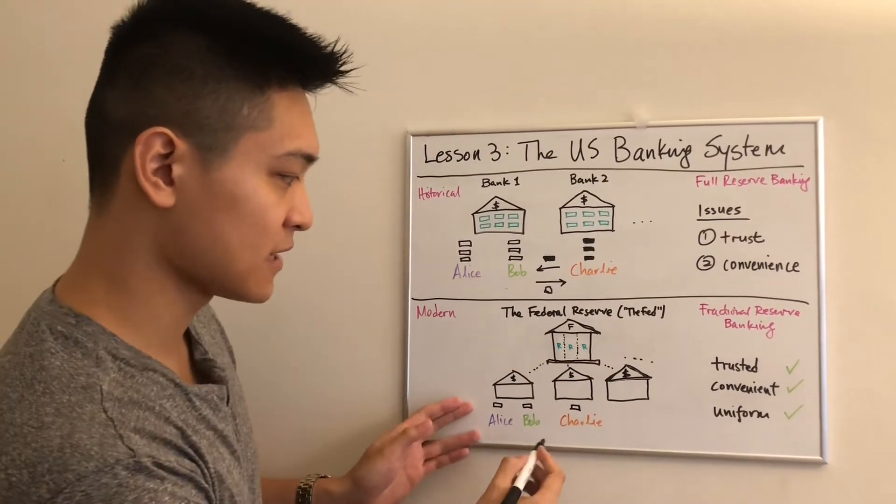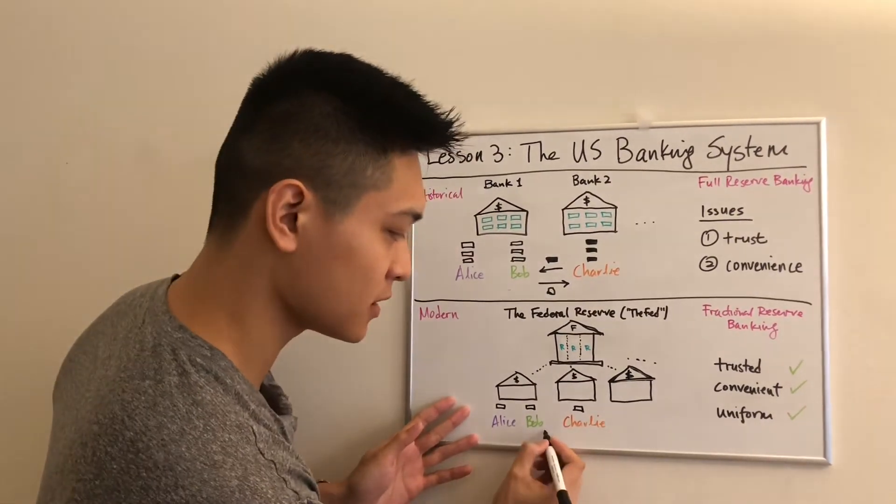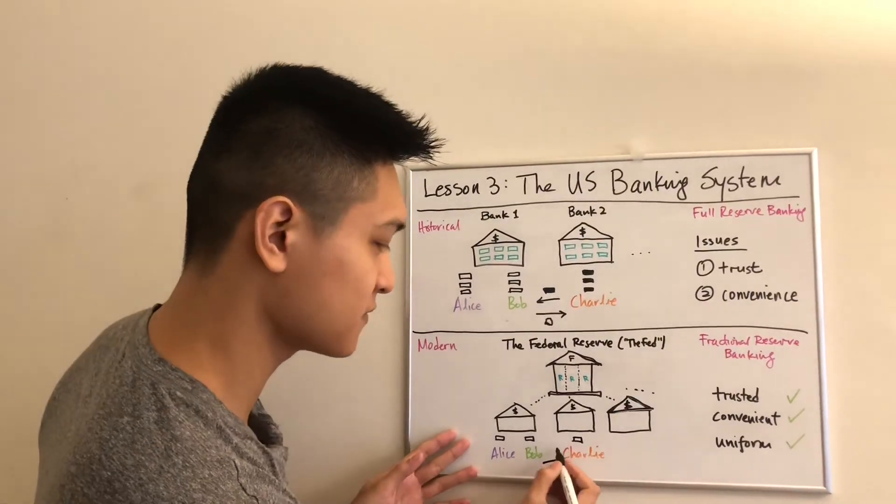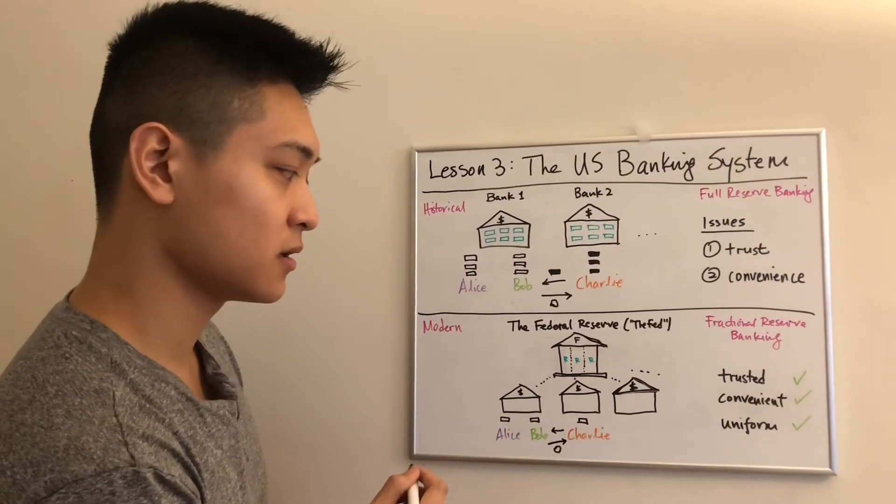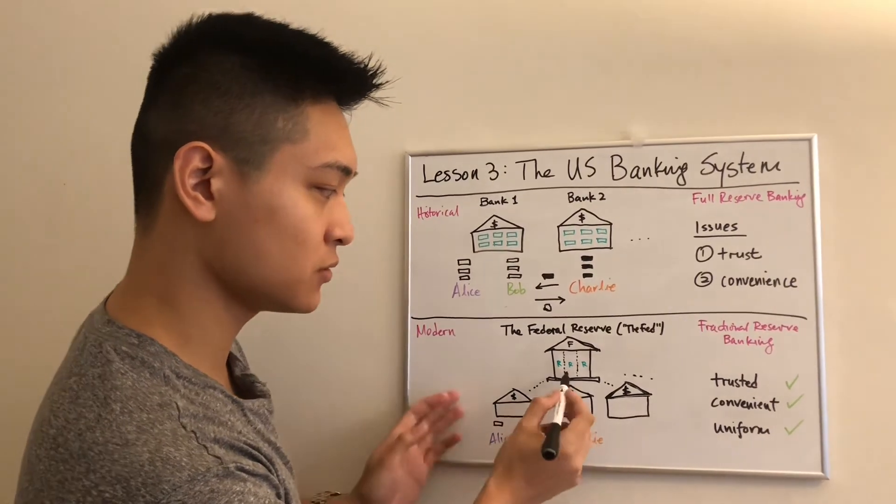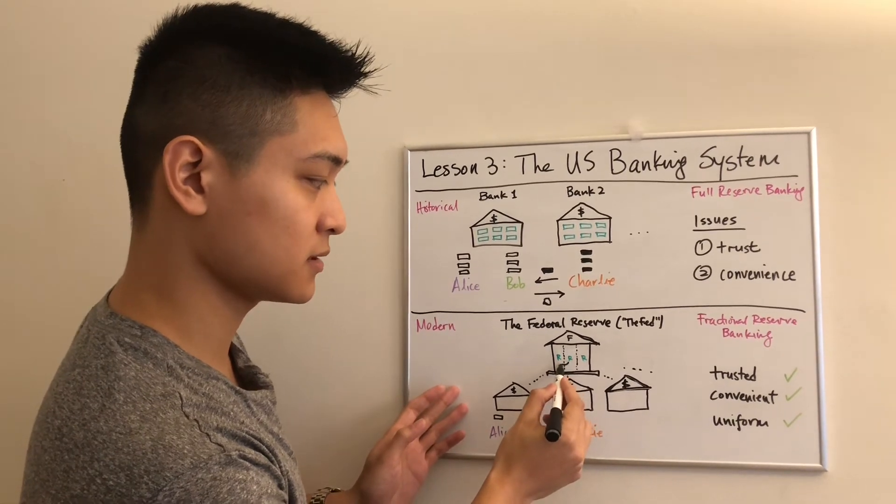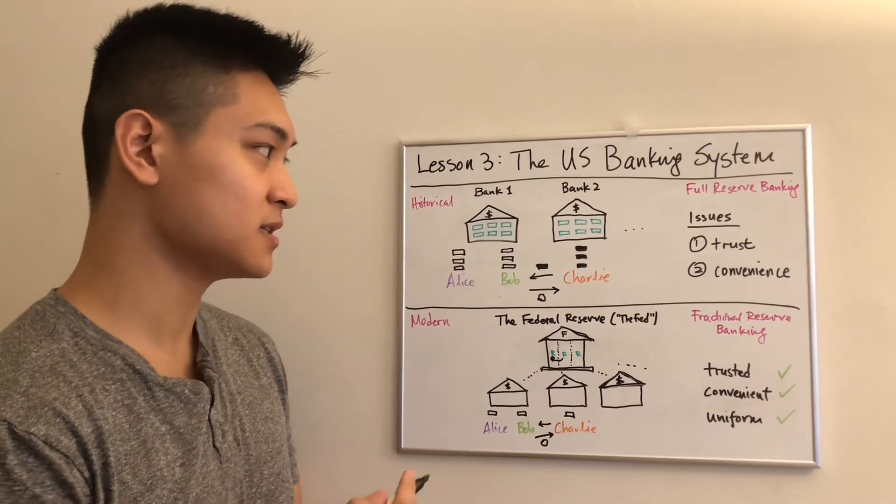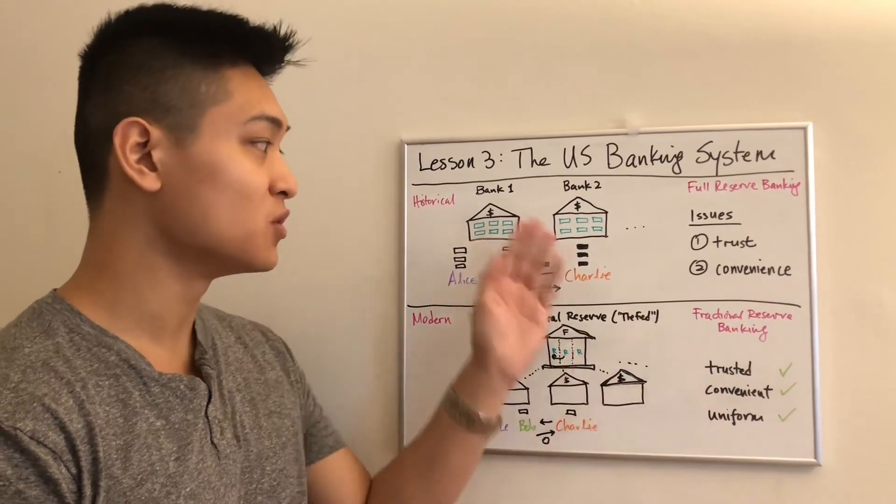So now for this similar transaction, if we were to look at it again, when Bob gives Charlie some bread so he can eat and Charlie pays for it with one of these notes from his own bank, all that happens is that bank one just calls on bank two to move the reserve at the Fed, which is all digital. So this reserve comes there now and it's owned by bank one, and this is much more easy and convenient to move than moving a bunch of gold.